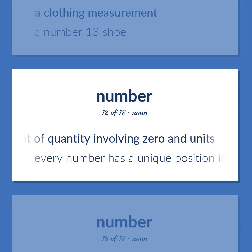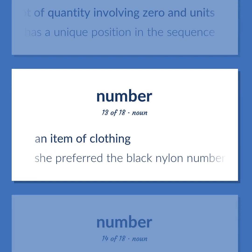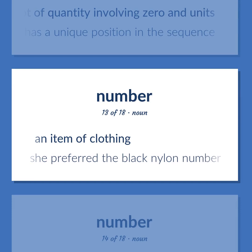Every number has a unique position in the sequence. An item of clothing. She preferred the black nylon number.